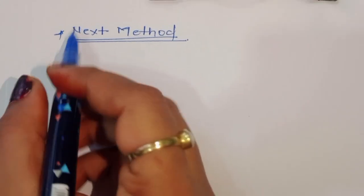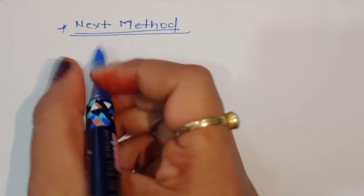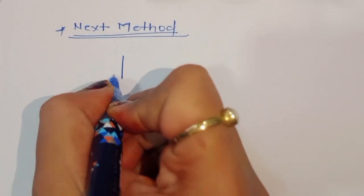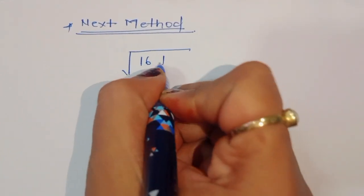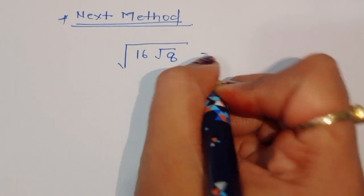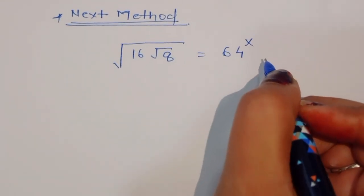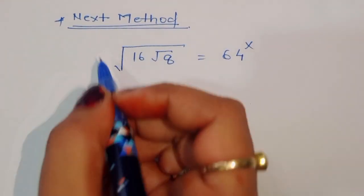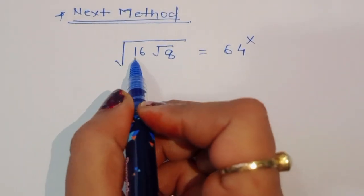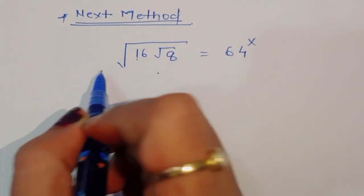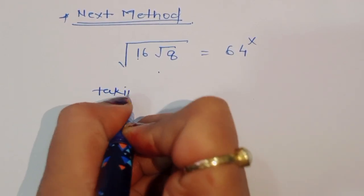Now we are solving using the second method. The equation is √16 · √8 = 64^x. We will square both sides to simplify.